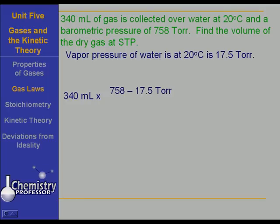So it's 758 minus 17.5 torr over 760 torr. And that then, when multiplied by 340, will reduce the 340.